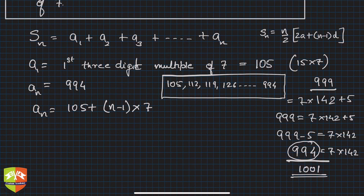Now an is 994, so 994 is equal to 105 plus n minus 1 times seven. So 994 minus 105 plus seven is equal to seven n.